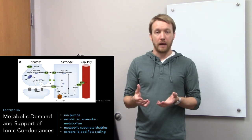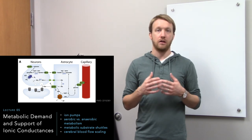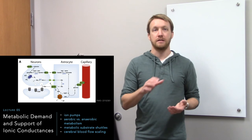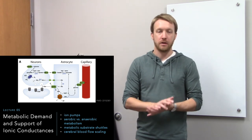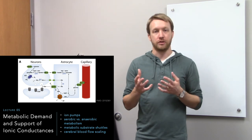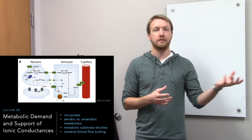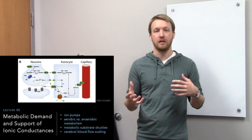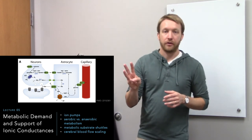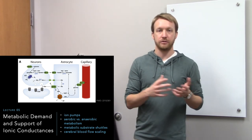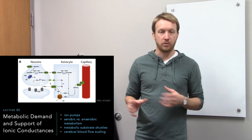Then there's the breakdown of pyruvate into carbon dioxide and a whole bunch of ATP — that's our aerobic metabolism. Glycolysis takes place in the cytoplasm and seems to happen more so in astrocytes, while aerobic metabolism takes place in the mitochondria and more so in neurons. This makes sense because neurons are a more expensive cell, and astrocytes are better connected to the blood. They'll get glucose first, undergo glycolysis, and then pass pyruvate over to neurons. That's going to be the focus when we talk about metabolic substrate shuttles — moving things from astrocytes to neurons.